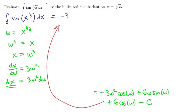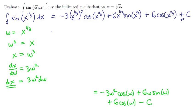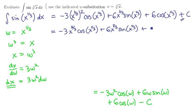Back substituting with w equals x to the one-third, we get negative 3 times x to the one-third quantity squared times cosine of x to the one-third, plus 6 times x to the one-third times sine of x to the one-third, plus 6 times cosine of x to the one-third, plus the integration constant. Cleaning this up: minus 3x to the two-thirds times cosine of x to the one-third, plus 6x to the one-third times sine of x to the one-third, plus 6 cosine of x to the one-third, plus C.